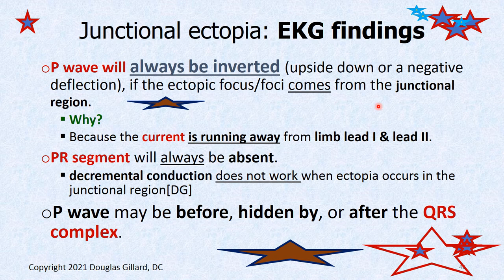EKG findings of junctional ectopia — make a note card, you need to know these. Rule number one: the P wave will always be upside down with junctional ectopic foci, no exceptions, because the current is always running away. The PR segment will always be gone. This distinguishes junctional from atrial ectopic foci: atrial ectopic foci in the left atrium can invert the P wave but will always have a PR segment. Junctional ectopic foci never have a PR segment.